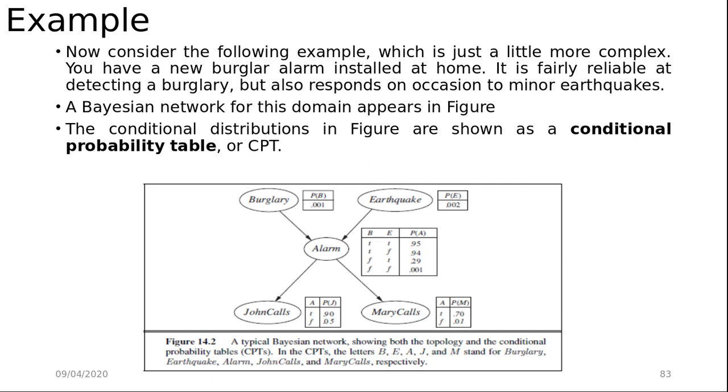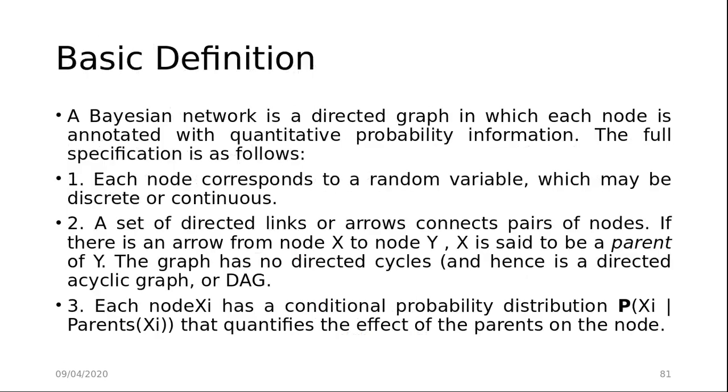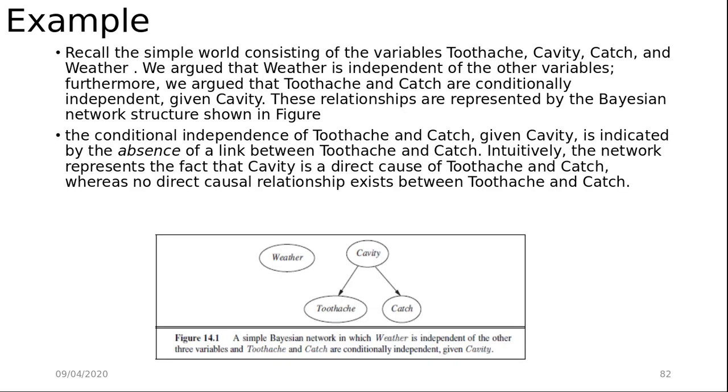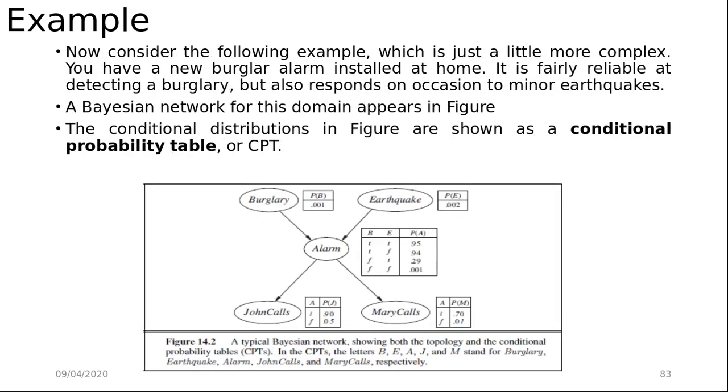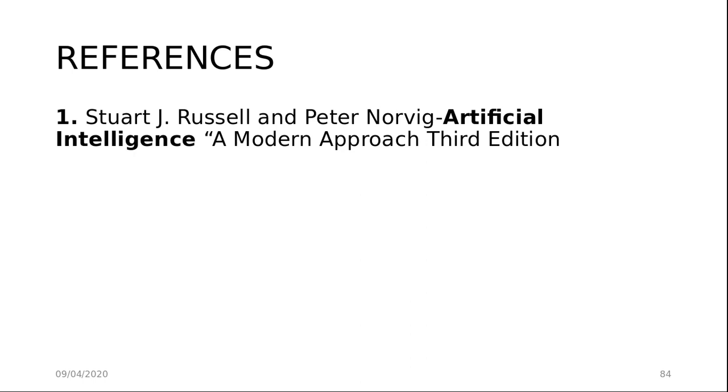Here we have defined the Bayesian Network with two examples, so you can understand how the Bayesian Network works, including conditional probability tables and conditioning cases. All our material is from Artificial Intelligence: A Modern Approach, third edition. You can refer to this text for more information. Session ends here. Thank you.